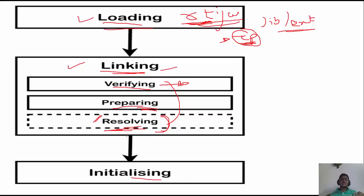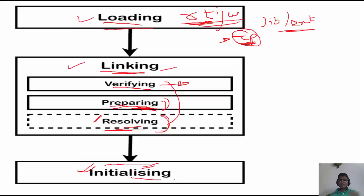After the resolve phase, the third phase is initialization. Initialization is where your static initialization blocks are initialized first, and after that all the values assigned default values in the prepare phase are initialized to their actual values. For example, the variable 'public static boolean something', which was set to false in the prepare phase, will be initialized to true — its actual value — in the initialization phase.